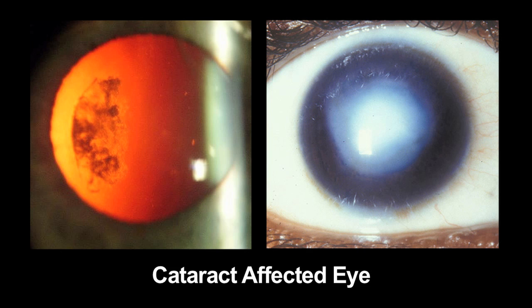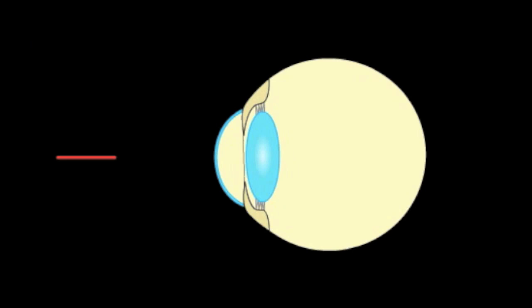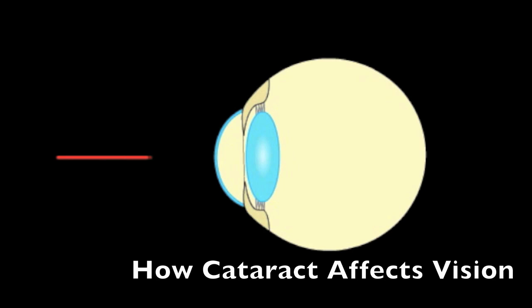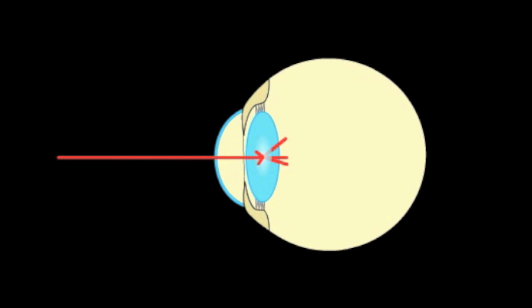A cataract-affected eye scatters and refracts light before it reaches the retina, caused by a fogging or clouding of the lens. We measure this deformation or clouding by allowing one to compare a good light path with a light path blocked by the cataract.